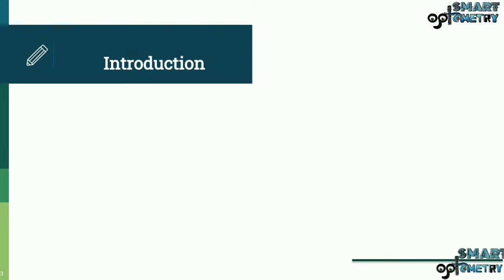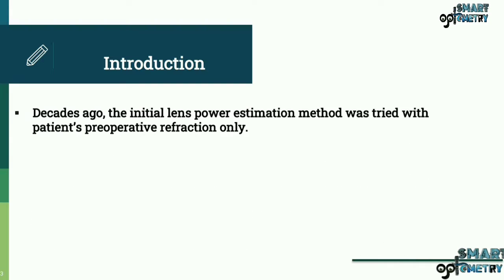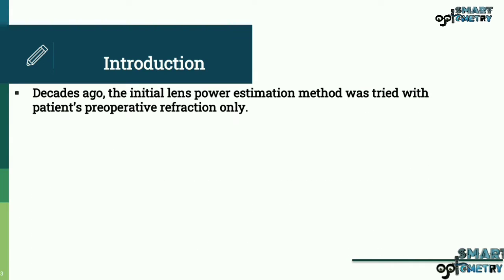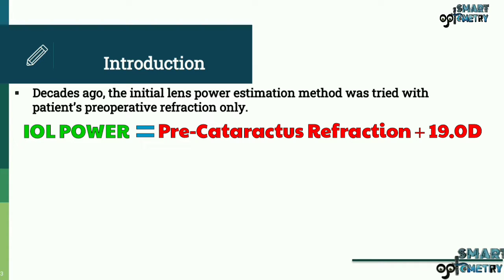Now let's start with the introduction of biometry formulas. Decades ago, the initial lens power estimation method was tried with patient preoperative refraction only, and the formula was very simple. IOL power equals pre-cataractus refraction plus 19 diopter.